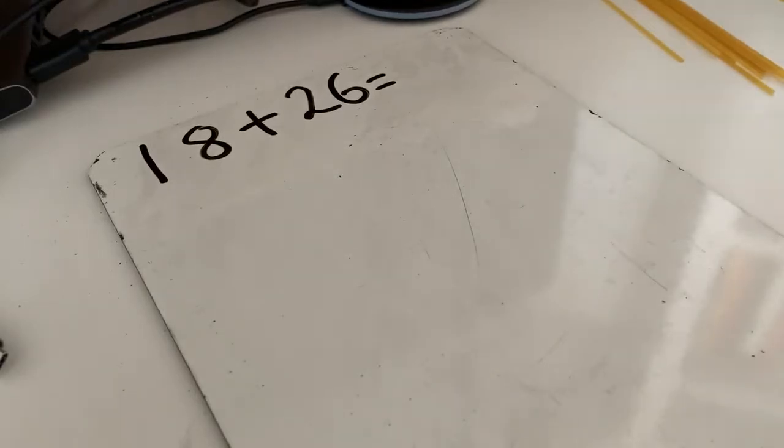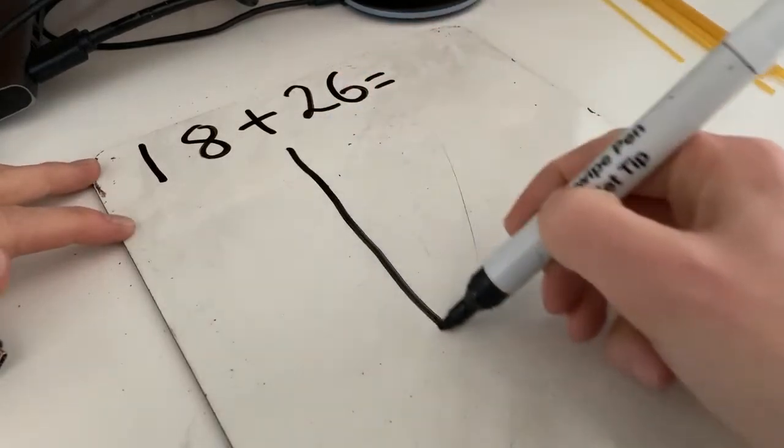Now that we've had a go with manipulatives, let's see if we can draw this. Okay, so first thing we need to do is we do our tens and ones grid.